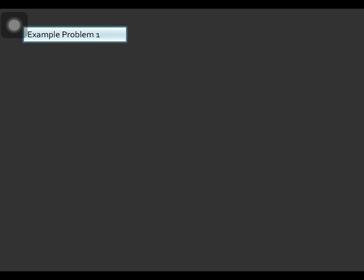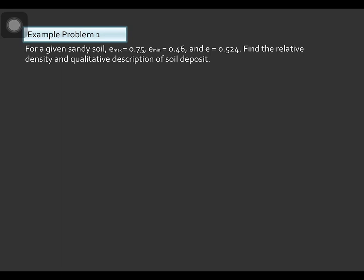Example problem number 1: For a given sandy soil, the maximum void ratio in its loosest condition or emax is equal to 0.75, the minimum void ratio or the void ratio in the densest condition is equal to 0.46, and the void ratio in-situ condition of the soil is equal to 0.524. Find the relative density and qualitative description of the soil deposit.